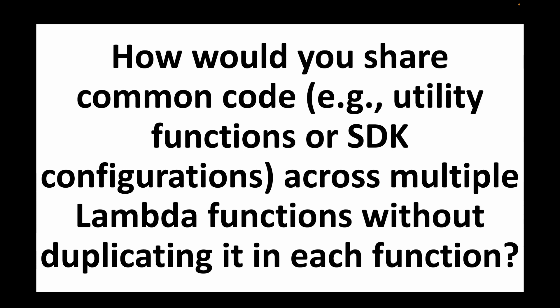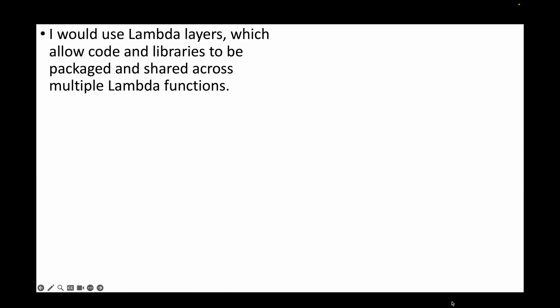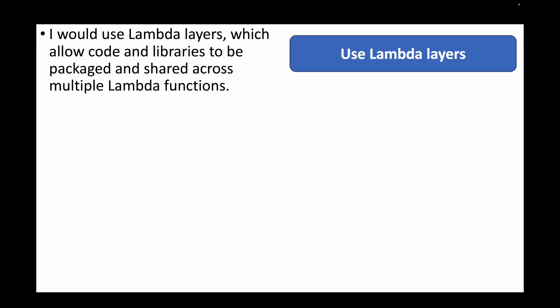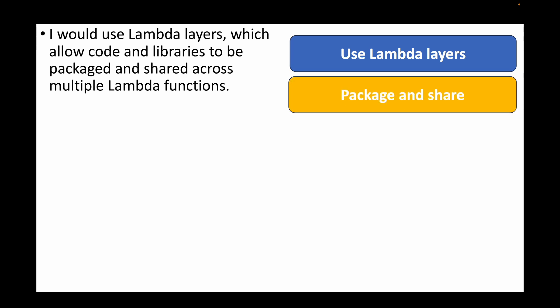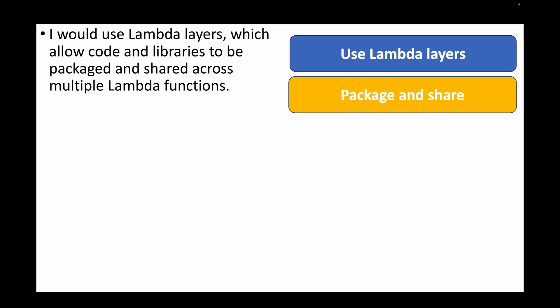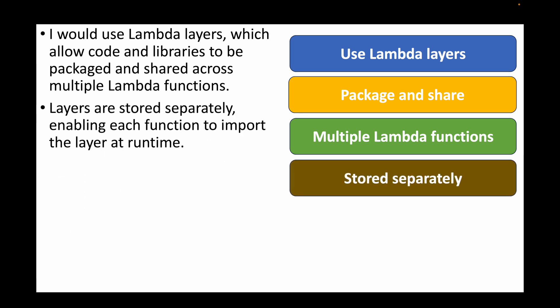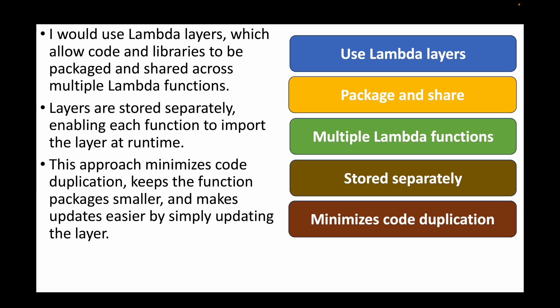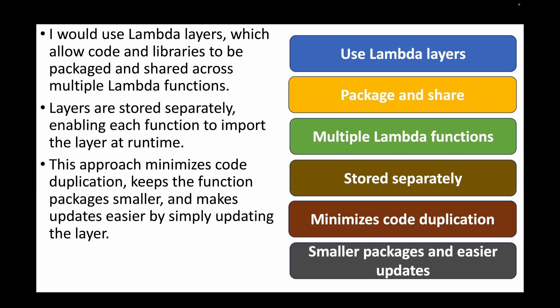The next question: how would you share common code — such as utility functions or SDK configurations — across multiple Lambda functions without duplicating it? This is where Lambda layers come in. Lambda layers allow code and libraries to be packaged and shared across multiple Lambda functions, acting as a shared library that you can import in any function. Layers are stored separately and imported at runtime, which minimizes code size, reduces duplication, keeps function packages smaller, and makes it easier to update shared libraries.